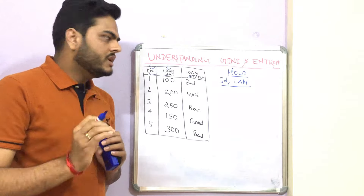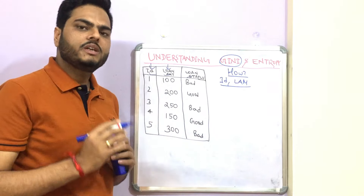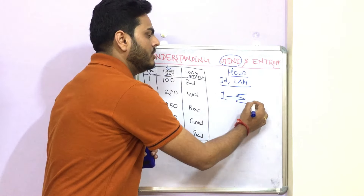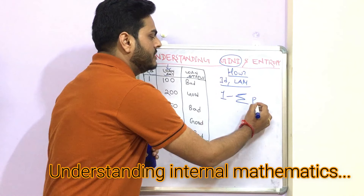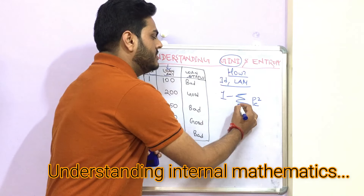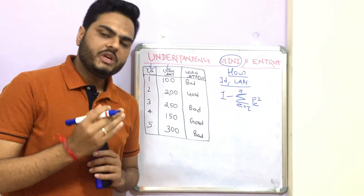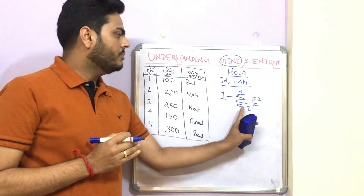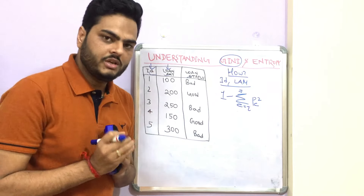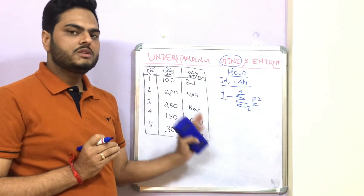The algorithm has to decide how to split and on which condition to split. Let's first understand what Gini index is. Gini index is calculated by the formula: 1 minus the summation of probability of C squared, where C goes from i to j. The meaning of this is we compute the probability for all the branches that happen inside the tree.